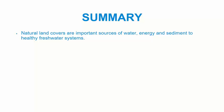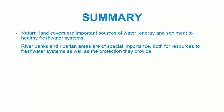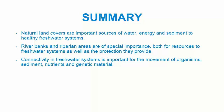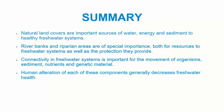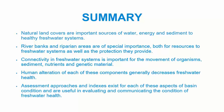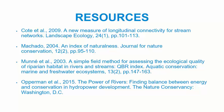That brings us to the end of this lecture. We've learned that natural land covers are important sources of water, energy, and sediment to healthy freshwater systems. Riverbanks and riparian areas are of special importance, both for resources to freshwater systems as well as the protection they provide. Connectivity in freshwater systems is important for the movement of organisms, sediment, nutrients, and genetic material. Human alteration of each of these components generally decreases freshwater health. We've also learned that assessment approaches and indexes exist for each of these aspects of basin condition and are useful in evaluating and communicating the condition of freshwater health. Thank you for your attention. Please rewind and replay any parts of the lecture that were not clear to you. When you're ready, proceed to the hands-on activity for this topic.